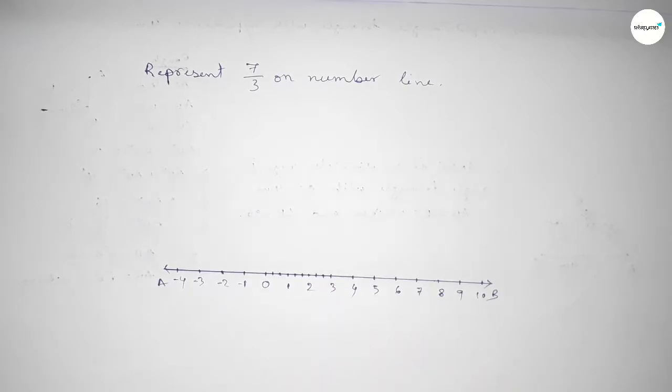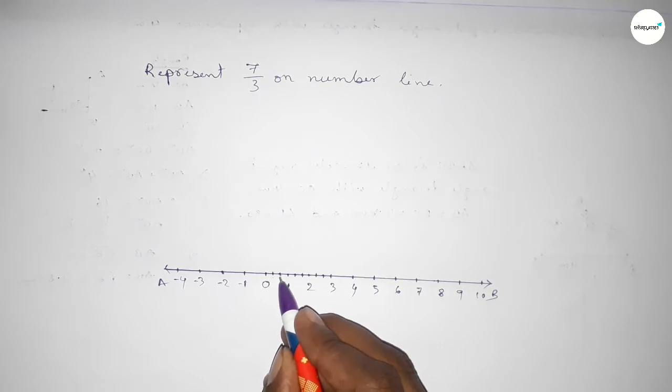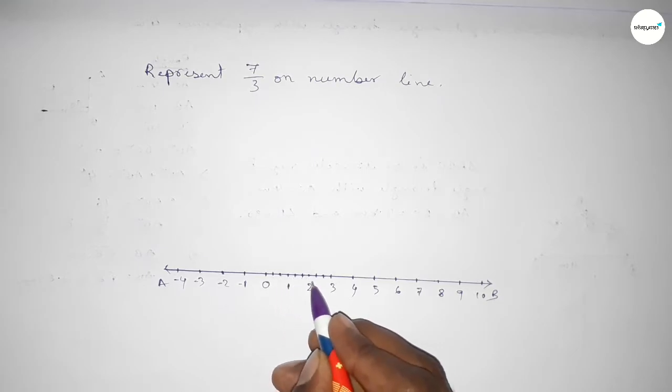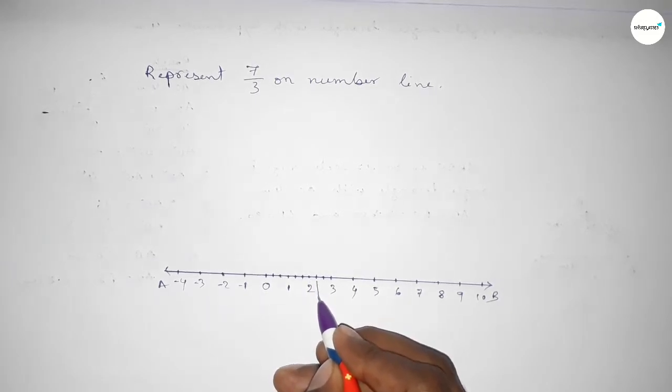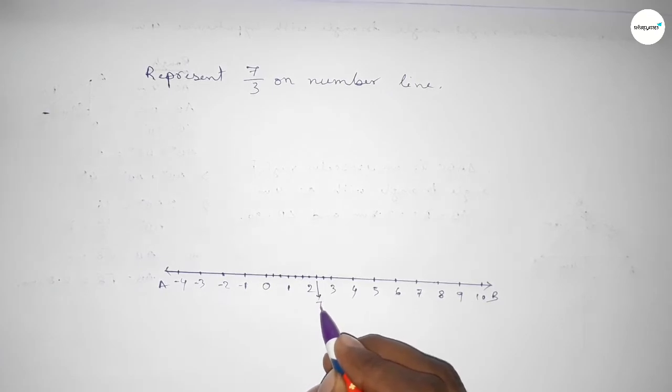This is 1 over 3, 2 over 3, 3 over 3, 4 over 3, 5 over 3, 6 over 3, 7 over 3. So this is 7 over 3 on the number line.